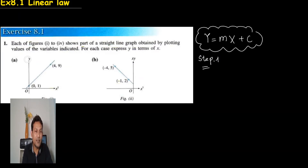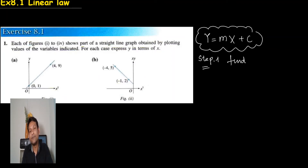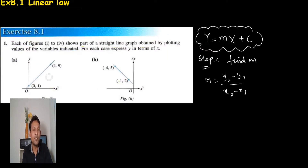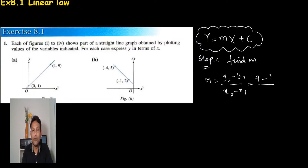Step number one: don't worry about x, y, or x squared — just find the gradient. To find the gradient, use (y2 minus y1) divided by (x2 minus x1). For example, the gradient is (9 minus 1) divided by (4 minus 0), which is 8 divided by 4, so the gradient is 2.